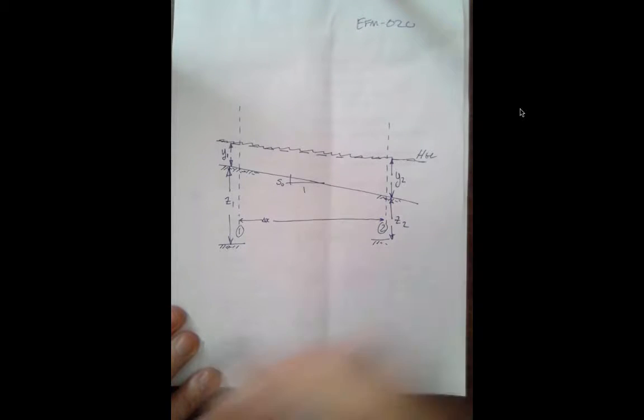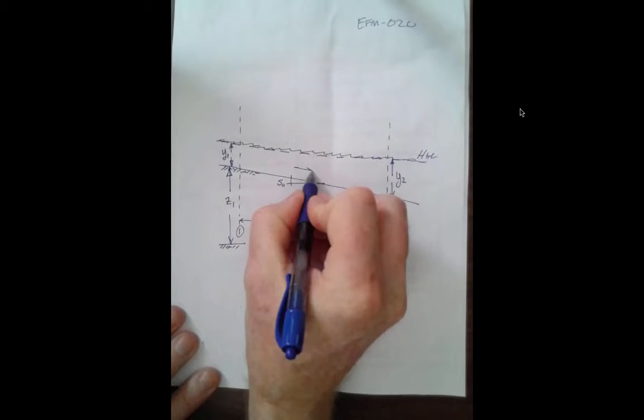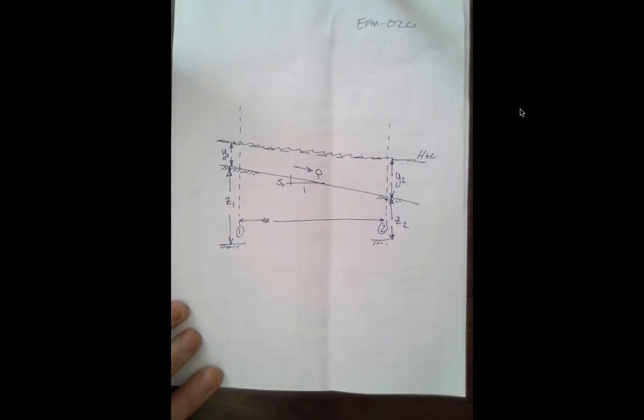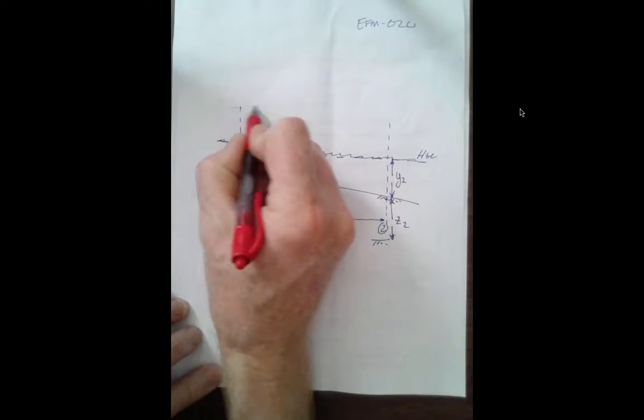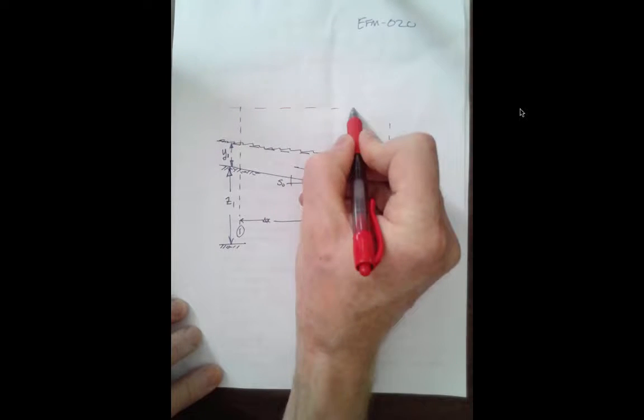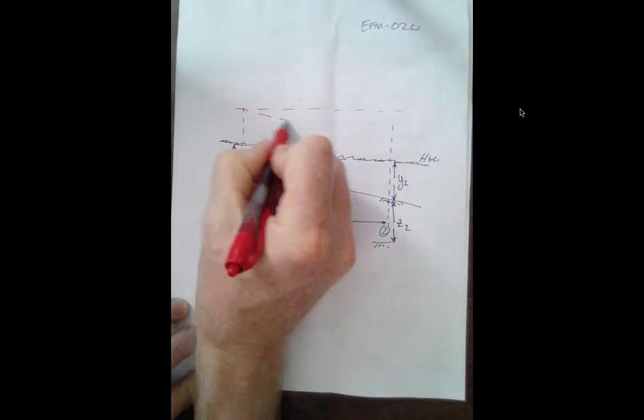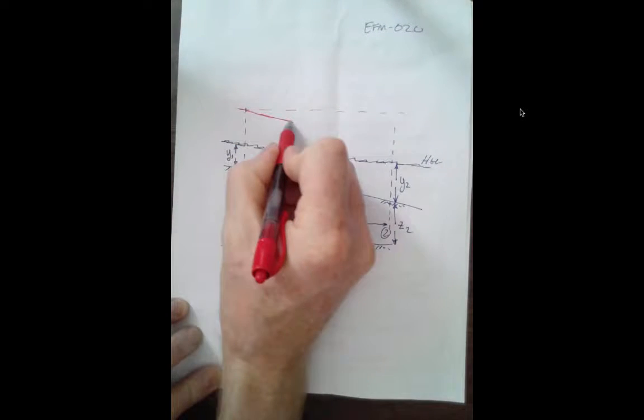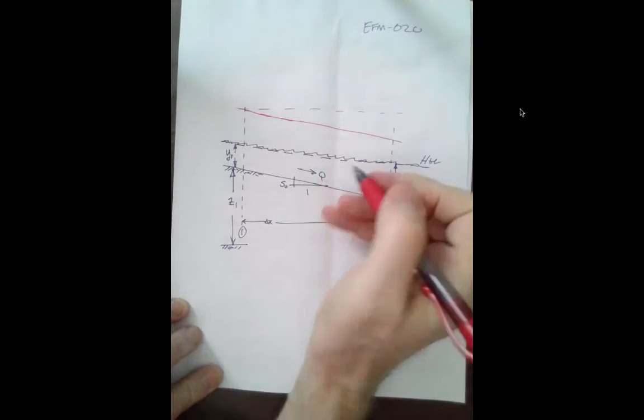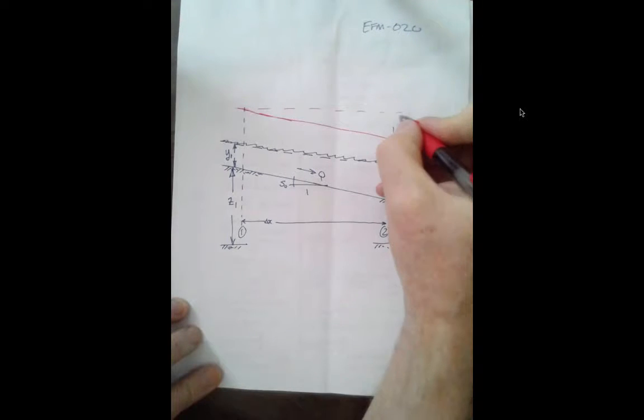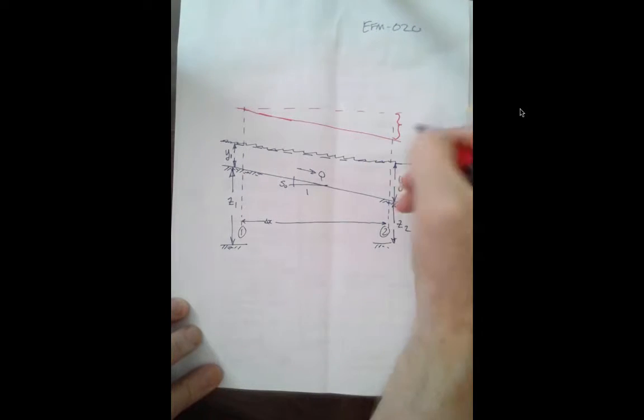And I have implied that flow is that way. And the last one we have will be our energy grade line. If there are no head losses, it would be horizontal, but because real systems have some friction, we'll call that the head loss.